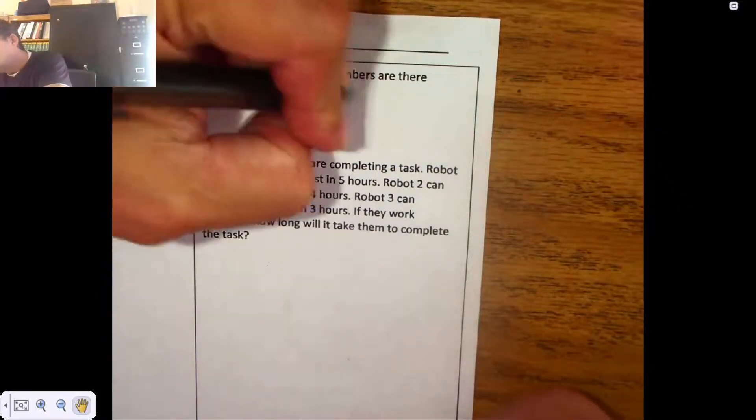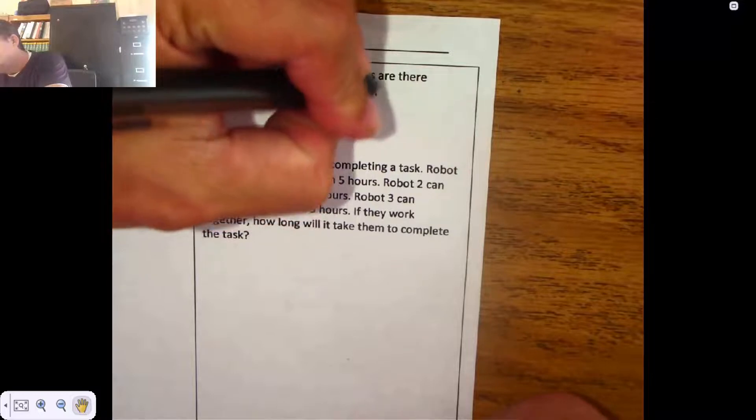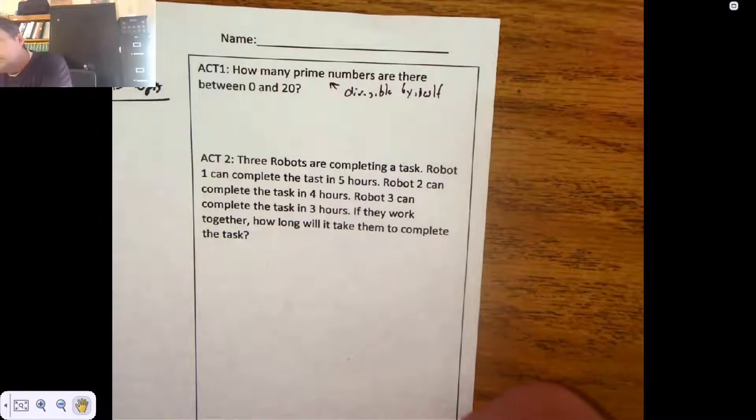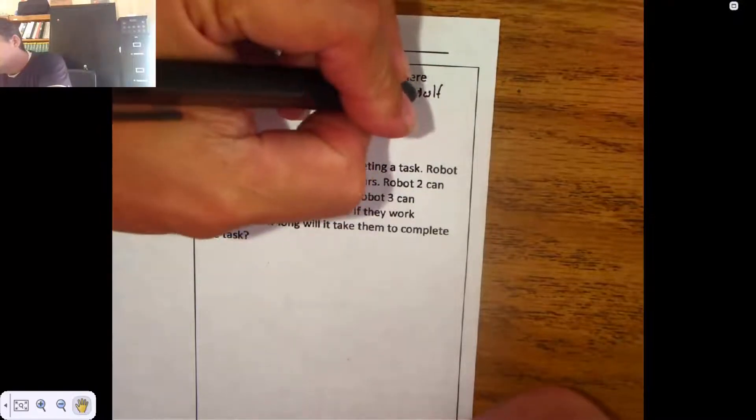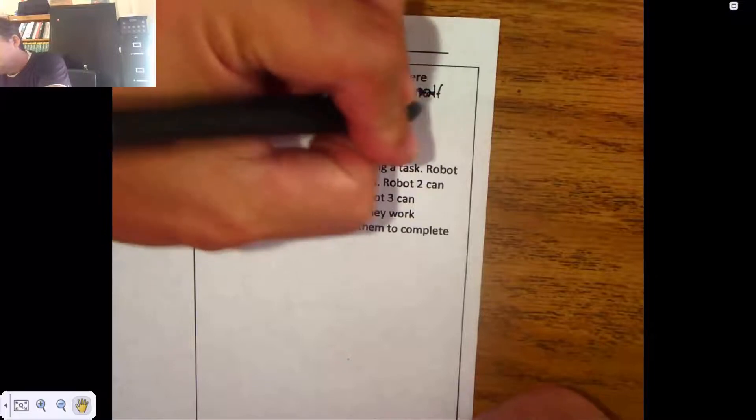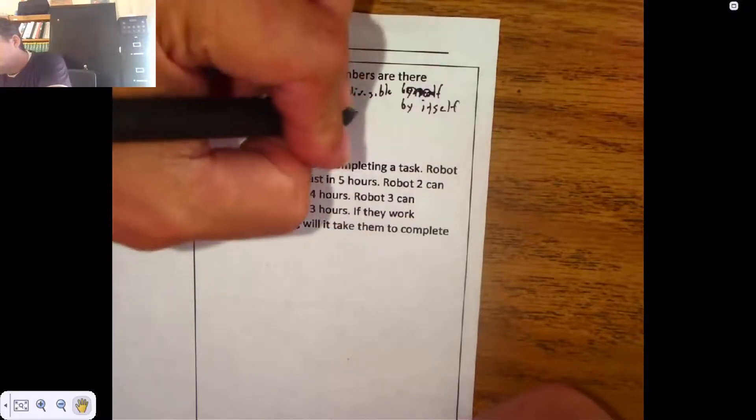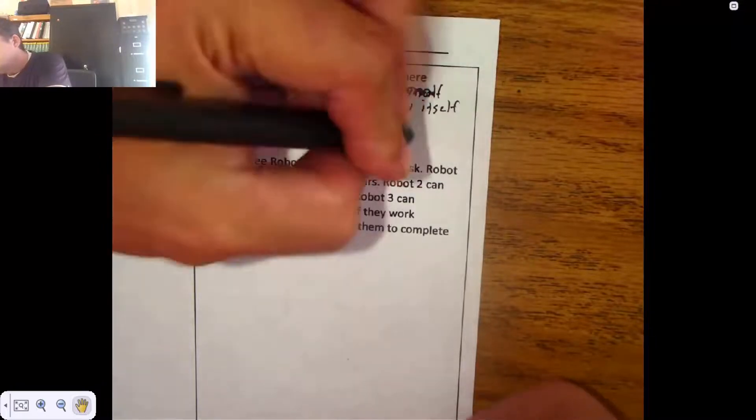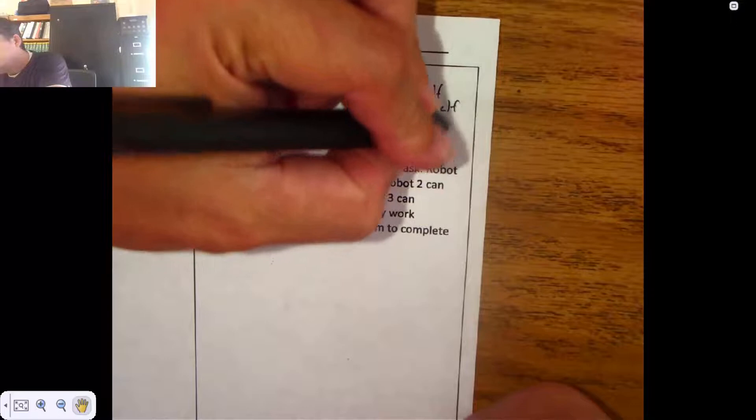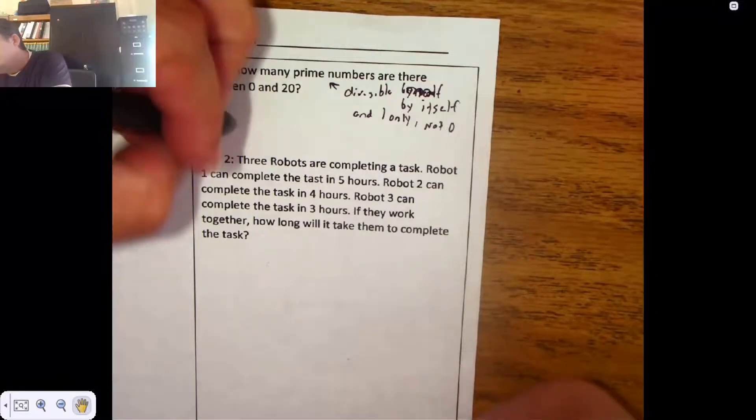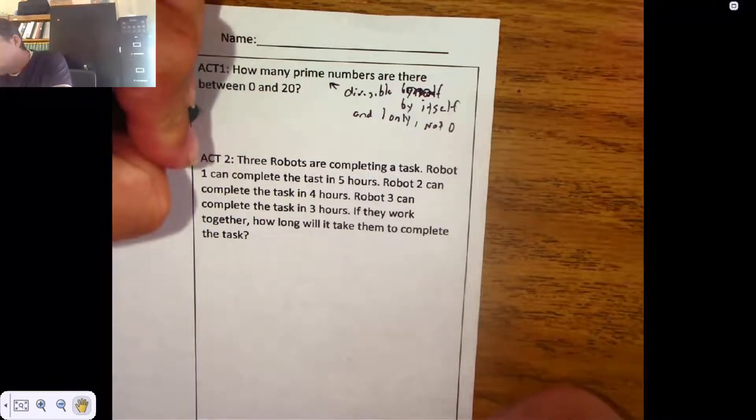So a prime number is divisible by itself and one only. It's by itself and one only, is also not zero because zero is not divisible by zero. All right, so between zero and 20, we just start listing them off.